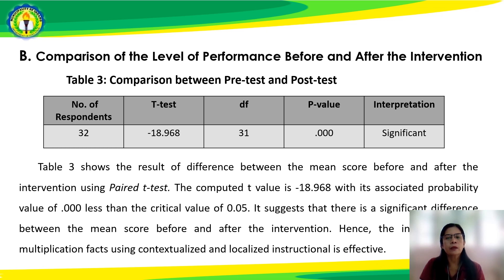Table 3 shows the result of the difference between the mean score before and after the intervention using paired t-tests. The computed t-value of negative 18.968, with its associated probability value of 0.000, is less than the critical value of 0.05. It suggests that there is a significant difference between the mean score before and after the intervention. Hence, the intervention on multiplication facts using contextualized and localized instructional materials is effective.